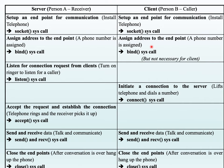The client does not necessarily need to execute a bind system call — it will be dynamically allotted a port number. The server, however, must use bind to assign an address. Then the server listens for incoming connections using the listen system call, which waits for any incoming connection and queues requests until it can service them. The client then initiates the connection just like lifting the telephone and dialing a number.